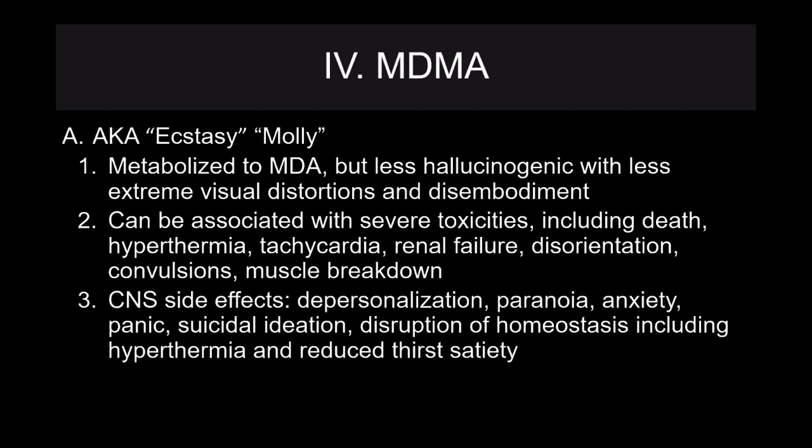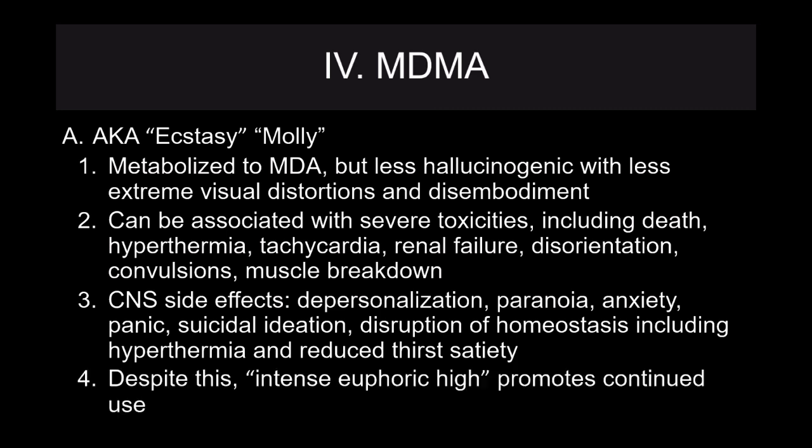Central nervous system side effects include depersonalization, paranoia, anxiety, and suicidal ideation. The biggest effects are disruption of homeostasis, including hyperthermia and reduced thirst satiety. Because of disruptions in homeostasis, the body has a hard time regulating its temperature, and all of the heat is expressed through the skin via sweat. This is one of the reasons why raves associated with ecstasy use are often very hot — everyone there is essentially running a fever. Because it has a pretty intense euphoric high, it promotes continued use, making it a very popular club drug.